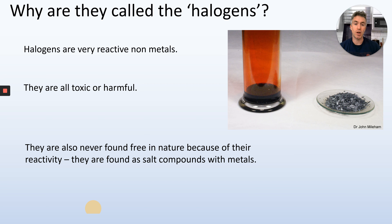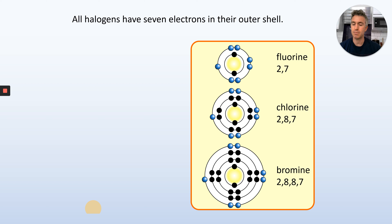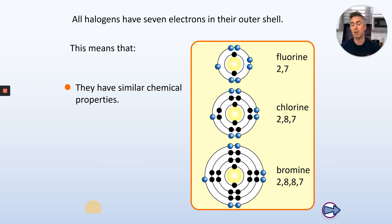Like the alkali metals, you never find halogens free in nature because of how reactive they are — if left outside they would automatically react and always form a compound. They form salt compounds with a metal normally; the word 'halogen' actually means salt-former. Like the group 1 elements, they all have the same electron arrangement: a full inner shell, and then when you get to the outer shell there's always one electron missing — seven electrons in their outer shell. Fluorine has 2 on the inner and 7 on the outer; chlorine has 2, then 8, then 7; bromine has 2, then 8, then 8, then 7.